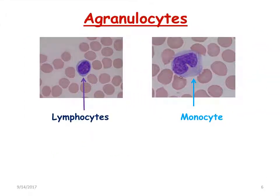The RBCs are present throughout, and alongside them you will find lymphocytes. The lymphocyte has a single nucleus with blue cytoplasm surrounding it. Then you have the monocytes, which are the largest white blood cells, also with a single nucleus but with a kidney-shaped nucleus.